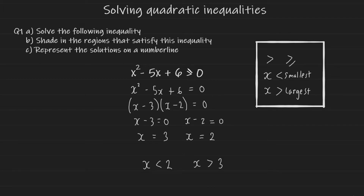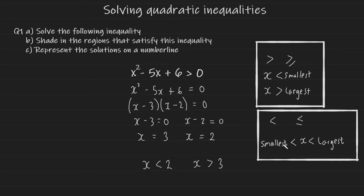If your quadratic inequality has a less than or a less than or equal to symbol, this means that your solutions are on the inside. Your smallest root is going to be less than x, which is going to be less than your largest root. This essentially means your solutions lie in between the smallest root and the largest root. If your original inequality had a less than or equals to sign, your solutions will have equals to components as well.